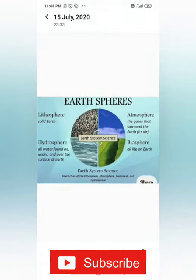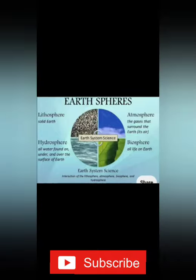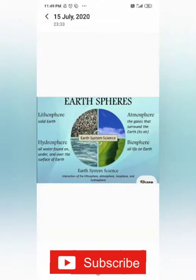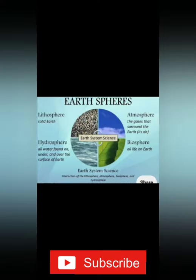The first sphere is the lithosphere. The word lithosphere is derived from the Greek word 'lithos', which means rocky. The lithosphere is the land on which we live — it is the solid outer layer of the earth consisting of rocks and soils. Next is the hydrosphere. The word 'hydro' means water in Greek. The hydrosphere consists of water bodies such as oceans, seas, rivers, lakes, ice caps on mountains, and water vapour in the atmosphere.